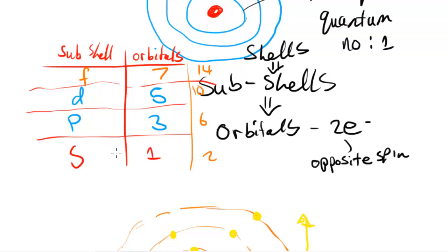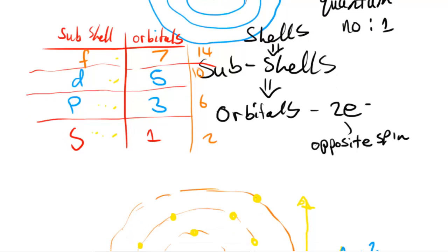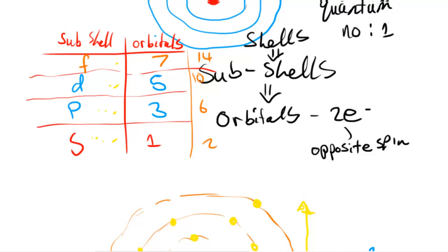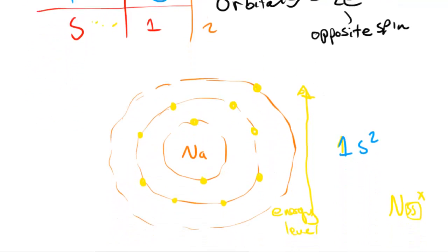So the first shell starts with just S, then the second one would have S and P, then the third would have S, P, and D, and then the fourth would have S, P, D, and F — which would have a maximum capacity of about 14 electrons in the f subshell alone, so probably around 32 electrons total for that shell.